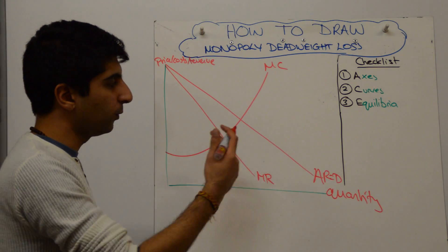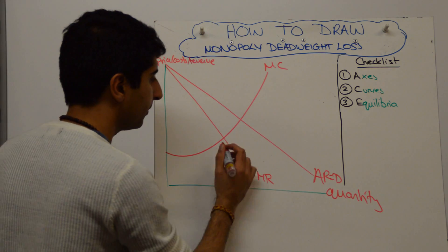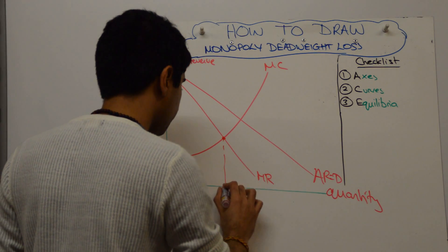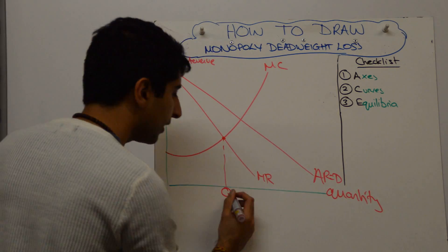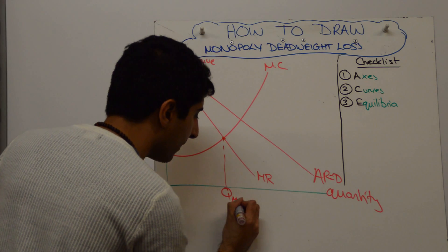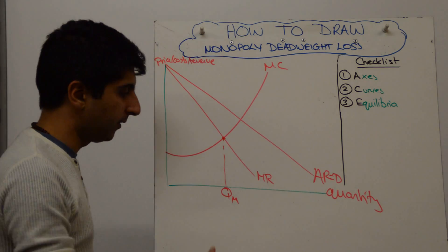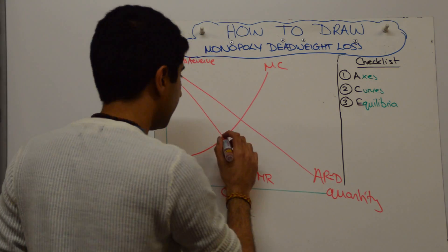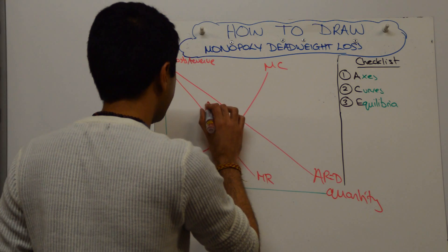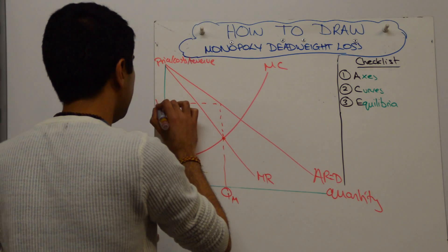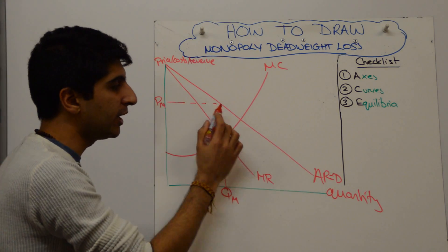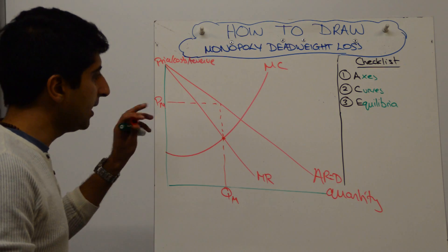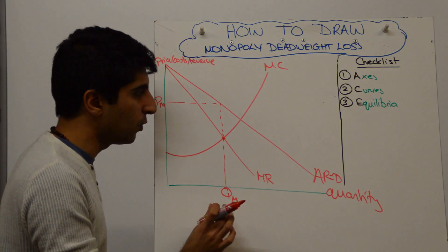Next thing we need to do is to work out the profit maximisation point, which occurs where MC equals MR, so put that on next. Call that Qm — Qm for monopoly — so that's the monopolist quantity. And call the price Pm, which remember we read off the AR curve; AR is the price. So Pm and Qm.